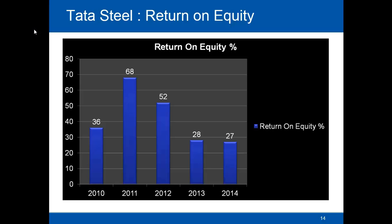Looking at Tata Steel's Return on Equity over five years from 2010 to 2014, we can clearly see that it declined from 68% in 2011 — which was very high — down to 52%, and then stabilized around 27–28% in 2013–14. Though 27–28% is still a good Return on Equity, there is a clear downtrend. The possible reason is that they have been servicing very high debt, so a lot of interest has been paid on borrowed capital, leaving less for shareholders.